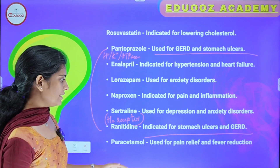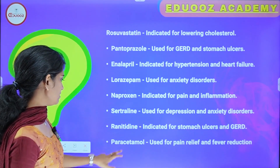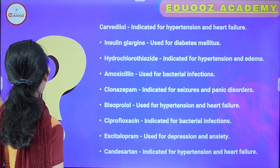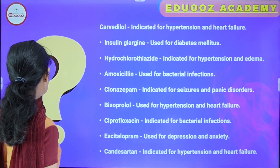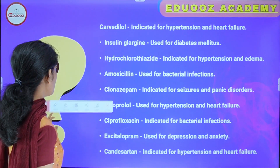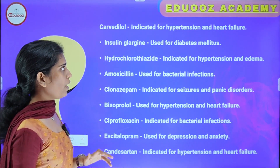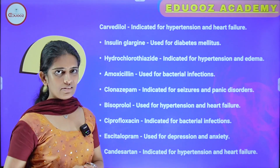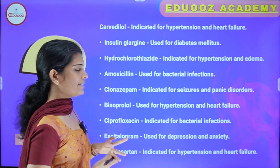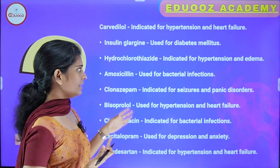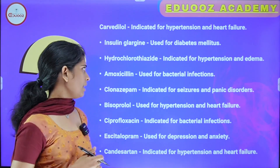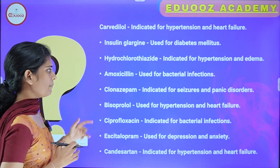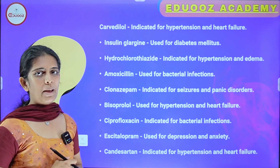Paracetamol is used for pain relief — it is an antipyretic drug. Carvedilol is an antihypertensive drug indicated for hypertension and heart failure. Insulin Glargine is used for diabetes mellitus. Hydrochlorothiazide is indicated for hypertension and edema. Amoxicillin is used for bacterial infections. Clonazepam is indicated for seizures and panic disorders.